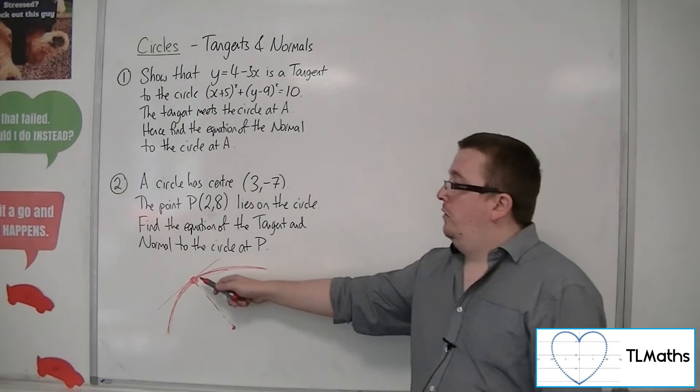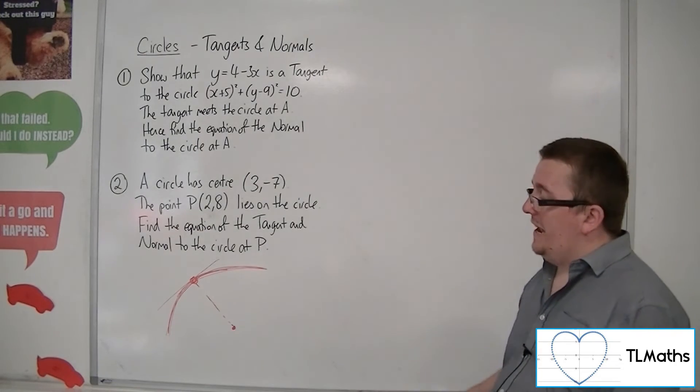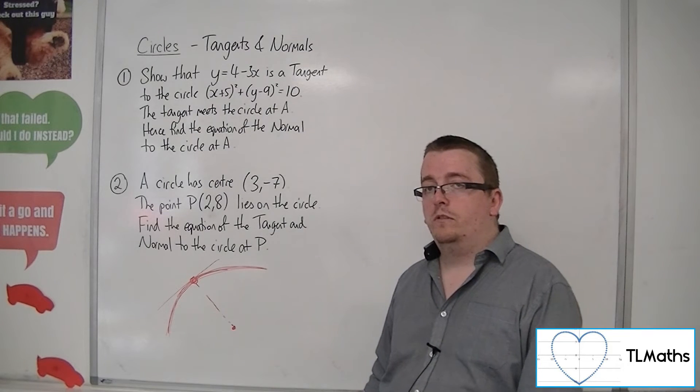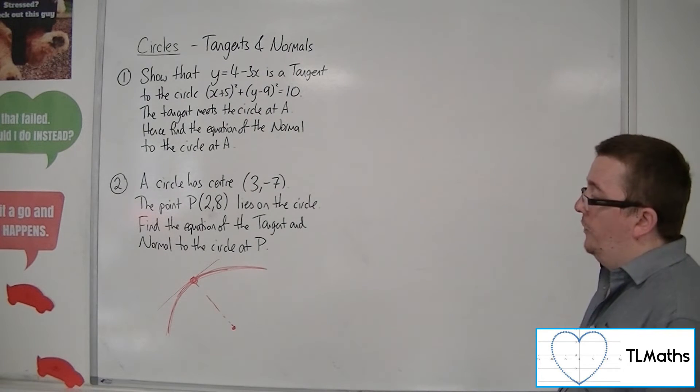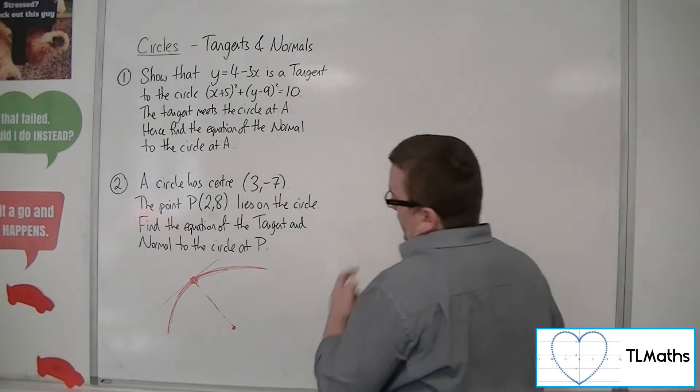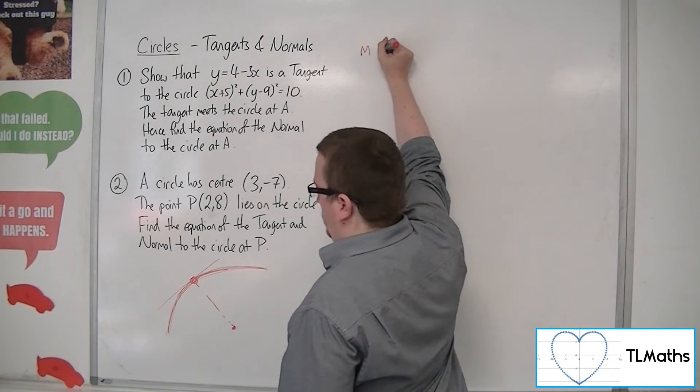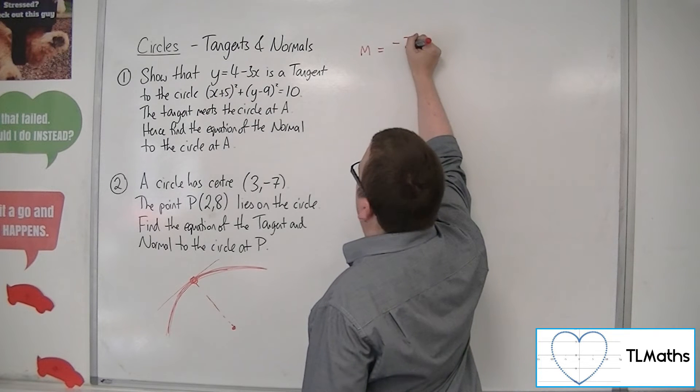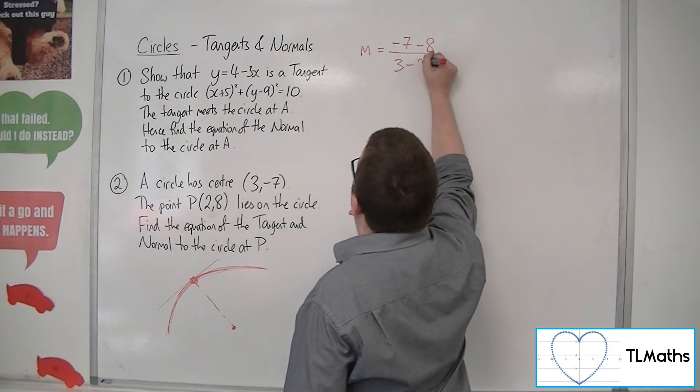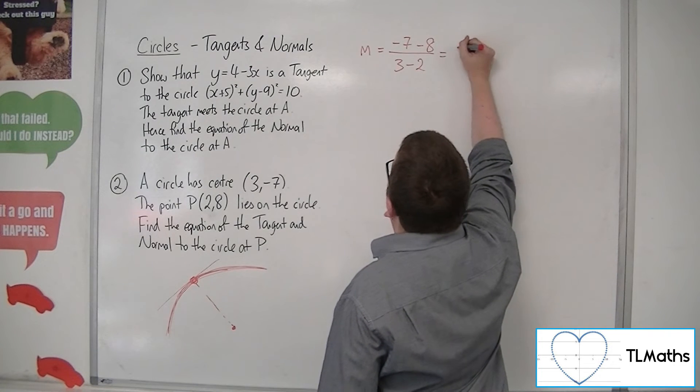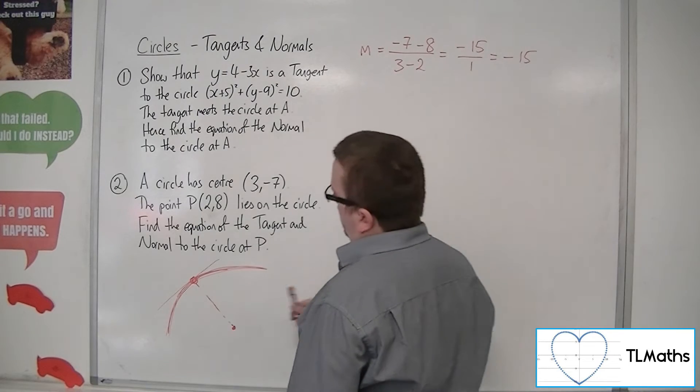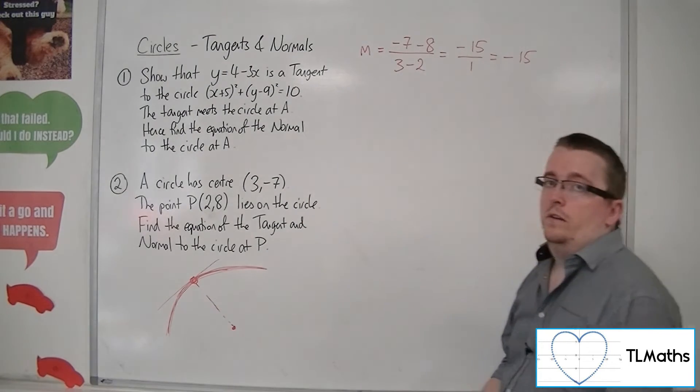And we need to find the equation of the normal and of the tangent. Because we've got two points, it makes sense to find the equation of the normal first. I can't really find the equation of the tangent, because I need to know the gradient between those two points first. So, gradient between these two points, the difference in the y coordinates, minus 7 take away 8, over the difference in the x coordinates, 3 take away 2. So we've got minus 15 over 1. So minus 15 is the gradient of the normal.